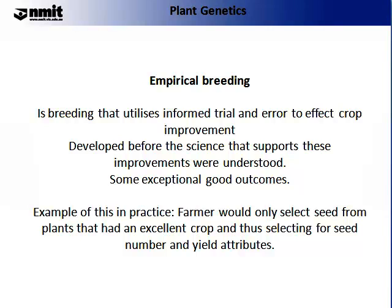I'd like to differentiate between empirical breeding and scientific breeding. Empirical breeding is a form of breeding that utilises informed trial and error to affect crop improvement, developed before the science supporting these improvements was understood. As an example, a farmer would only select seed from the best plants that had an excellent crop, selecting for seed number and yield attributes. It used to be common practice that a farmer would keep a portion of his seed every year and plant a small section of the field with it, thus obtaining new variation and sustaining old variation in his crop.